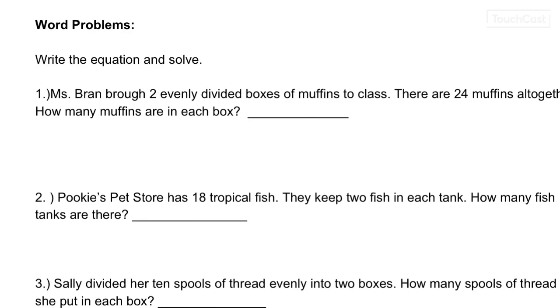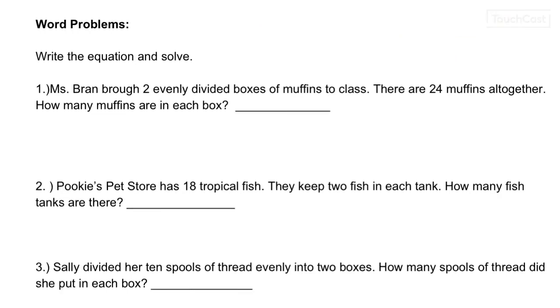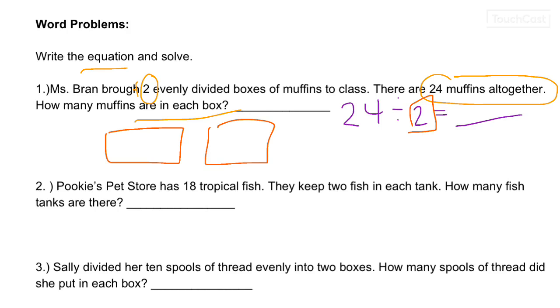Alright, our word problems today are division divided by 2, but we're going to be using multiply 2 to help. So let's take a look. Number 1. Miss Braun bought—ooh, B-O-U-G-H-T. Sorry about the typo. 2 evenly divided boxes of muffins. Brought. Still, I spelled it wrong. Brought 2 evenly divided boxes of muffins to class. There are 24 muffins altogether. How many muffins are in each box. So let's write our equation. 24 divided by 2 gives me blank.